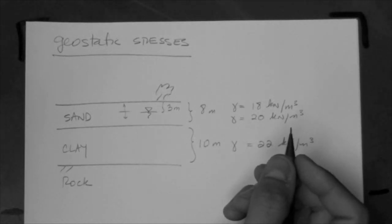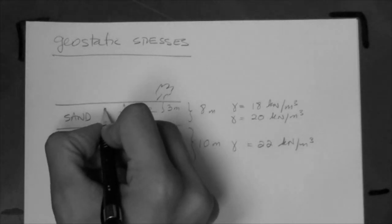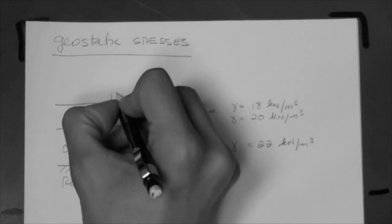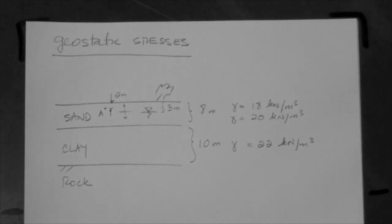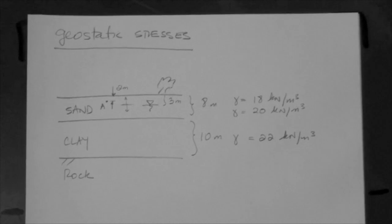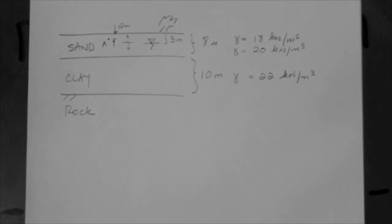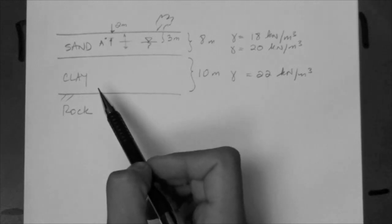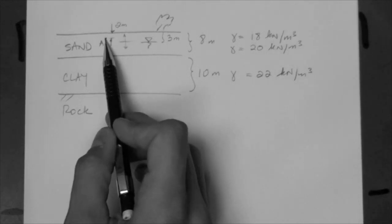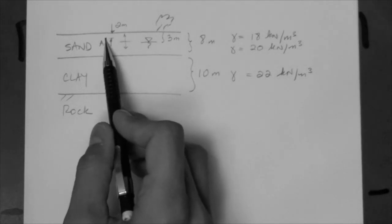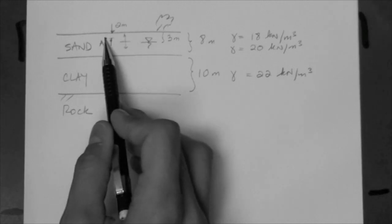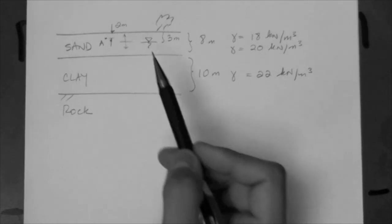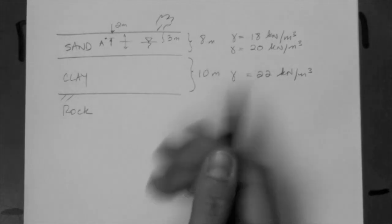Let's say that we have a point A, and point A is a distance two meters from the ground surface. The question is: first of all, is there any stress at point A? The answer is yes, of course, because the point is submerged in a soil — actually in the dry sand at this point, since the water table is at three meters. This point is in soil that is not saturated; it's dry. So there is stress acting at that point.